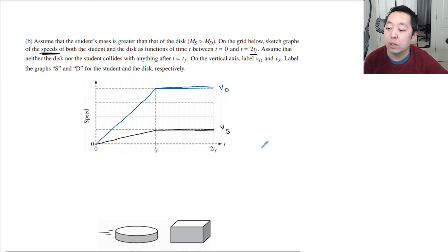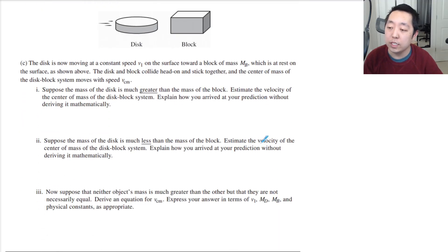The disk is now moving at constant speed V1 on the surface towards a block of mass MB, which is at rest. The disk and block collide head-on and stick together, and the center of mass of the disk-block system moves with speed VCM. Suppose the mass of the disk is much greater than that of the block.